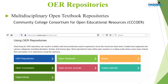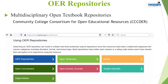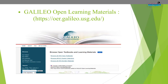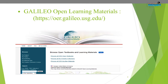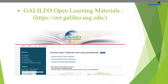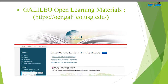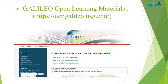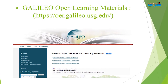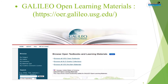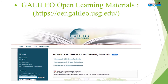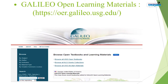Another example is Galileo Open Learning Materials, which brings together open educational resources throughout the University System of Georgia, including open textbooks and ancillary materials. This repository is administered by Affordable Learning Georgia, an initiative of Galileo and the University System of Georgia, which aims to reduce the cost of textbooks to students and contribute to their retention, progression, and graduation.